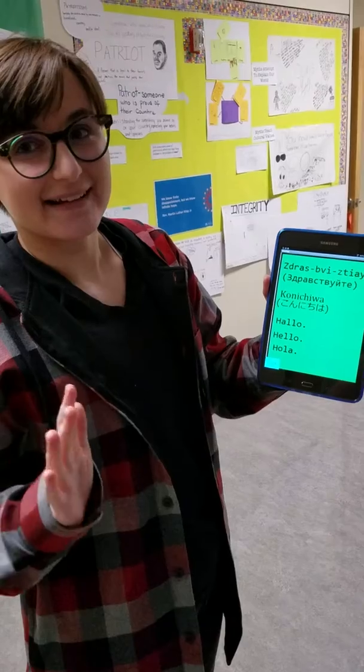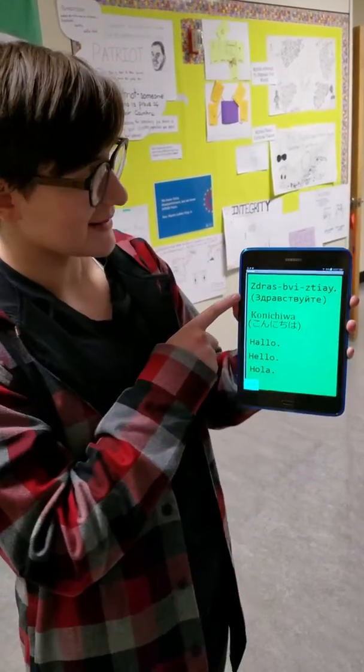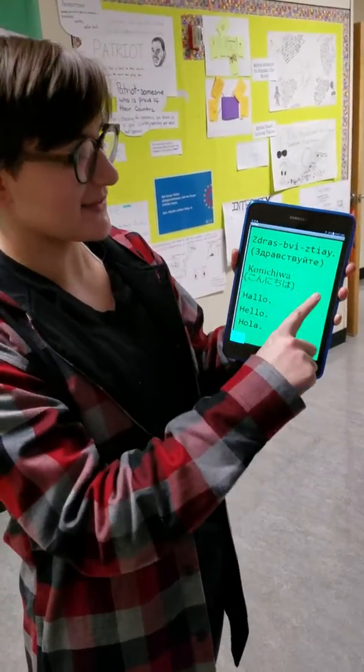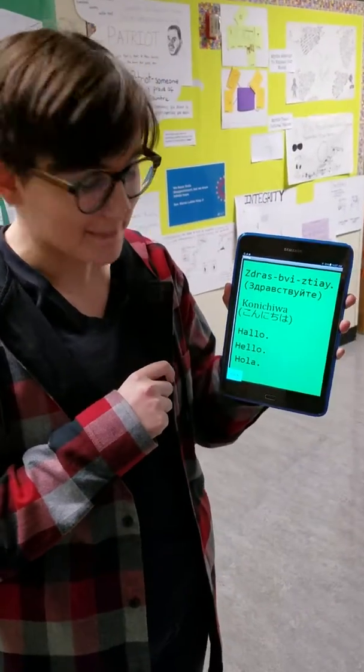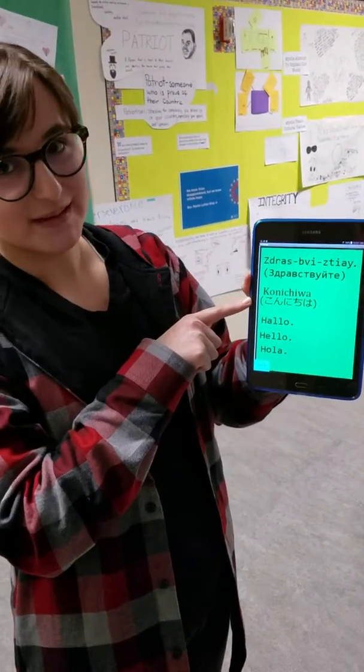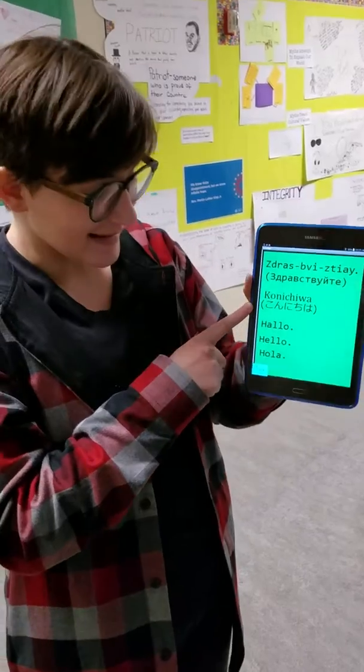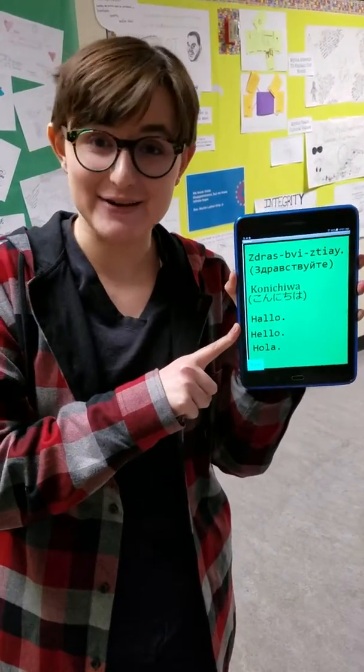What languages are there? This is Russian—it means hello. This is konnichiwa, which is Japanese. This is hallo, which is German.